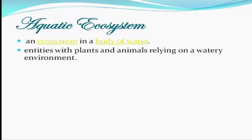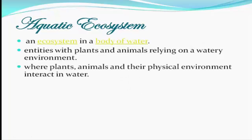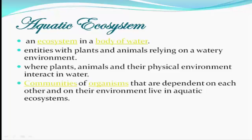Aquatic Ecosystem is entities with plants and animals relying on a watery environment. Their physical environment interacts with water. In other words, communities of organisms that are dependent on each other and on their environment live in the Aquatic Ecosystem.